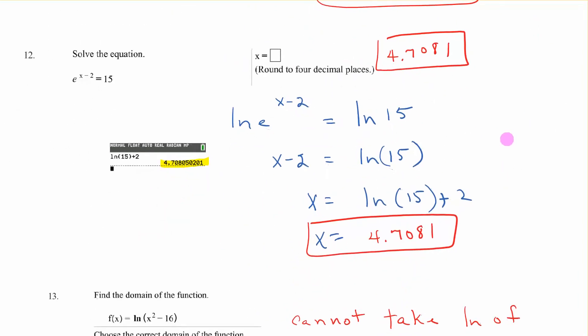Number 12. e to the x minus 2 equals 15. You take the ln both sides. The e and the ln are gone here. x minus 2 equals ln of 15. Add 2 to the other side. So in your calculator you do ln of 15 and you add 2. You get 4.7081.